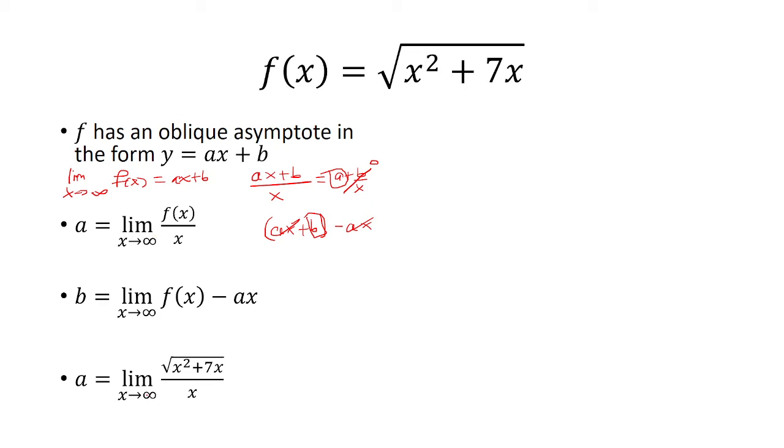We have the limit as x approaches positive infinity of our function all over x. At the top, we can factor out an x squared, and we have x squared times the quantity 1 plus 7 over x. The x squared comes outside the square root as just x, and it's positive x because x here is a positive number. So, the square root of a positive number squared is just a positive number.